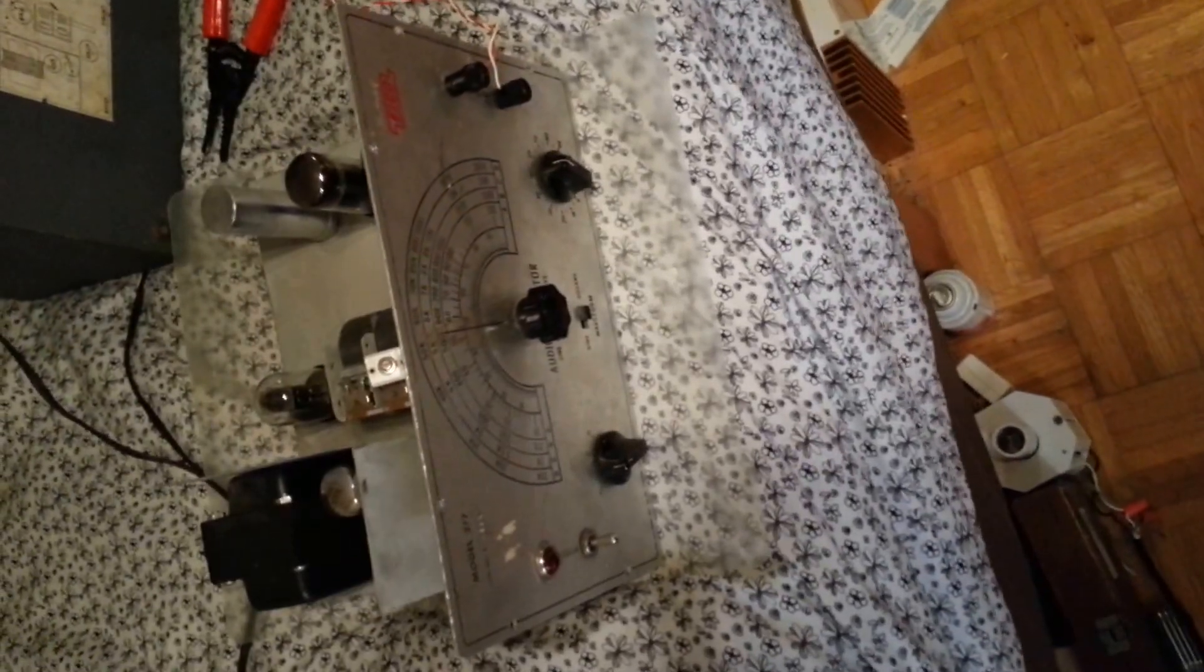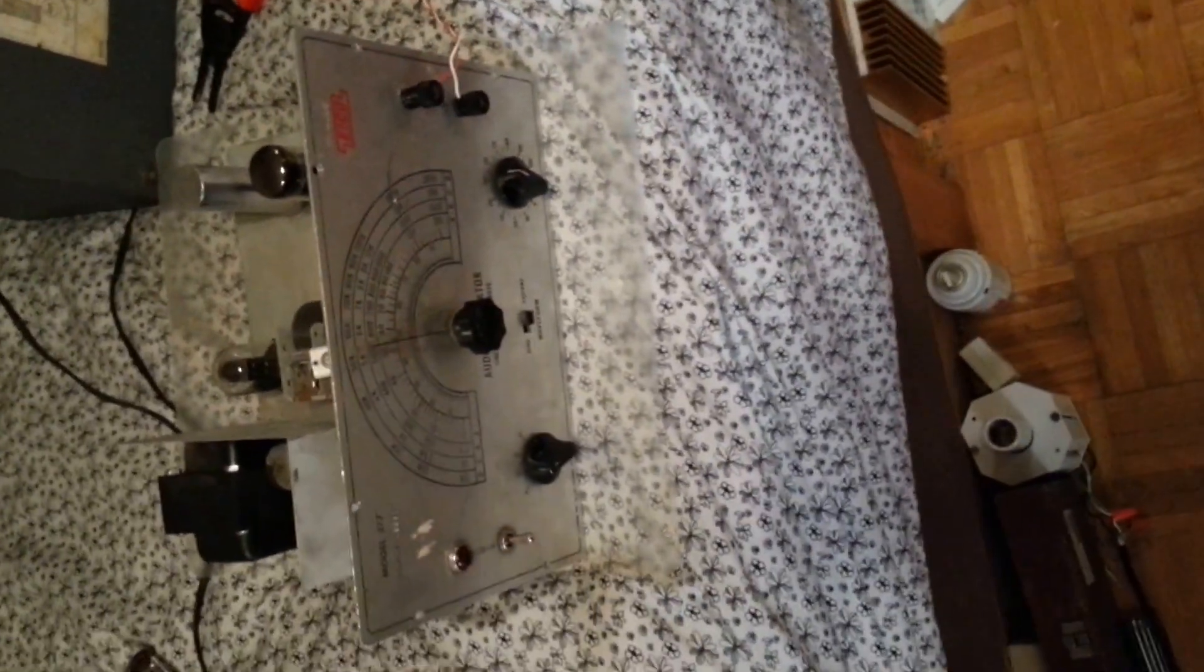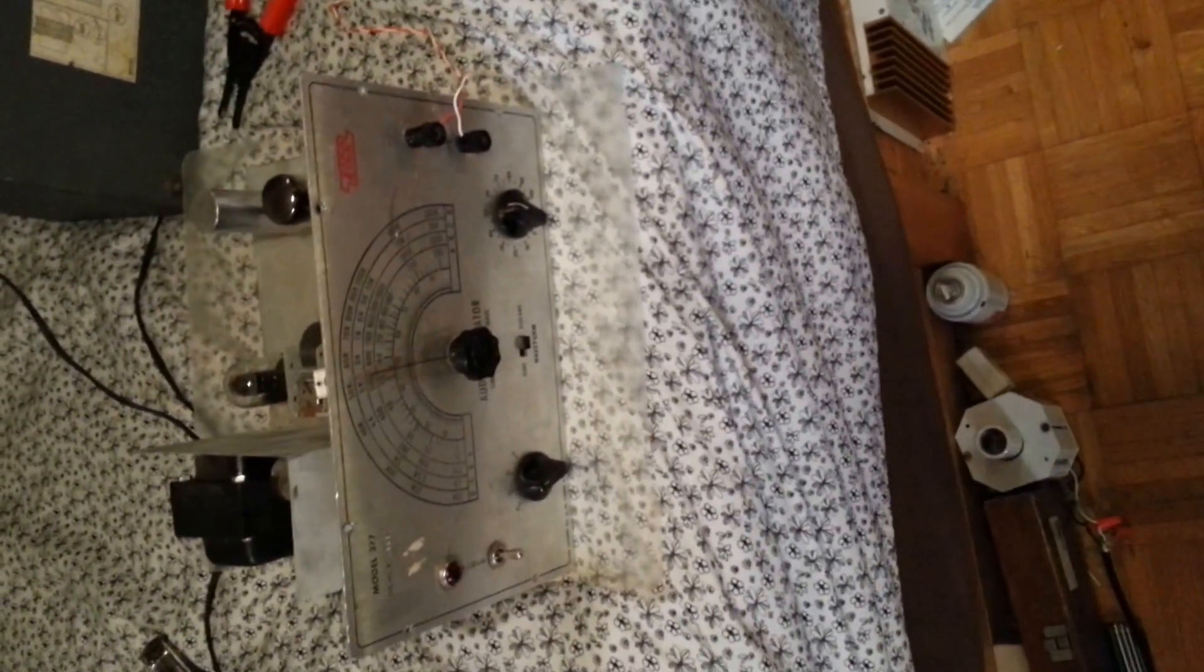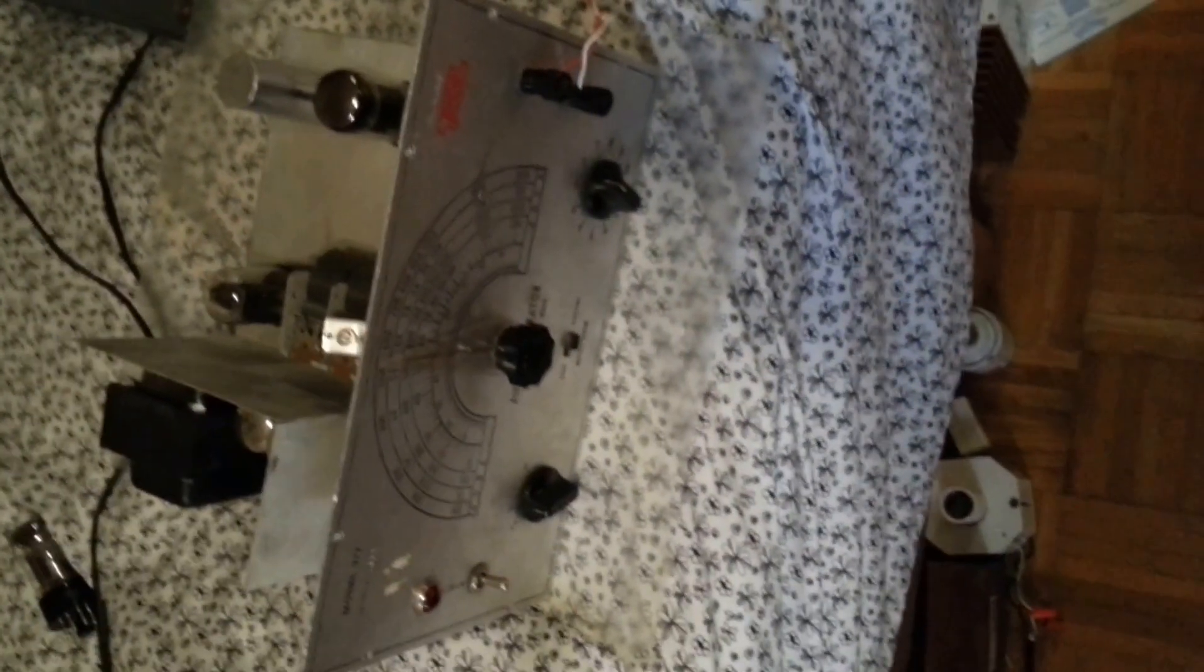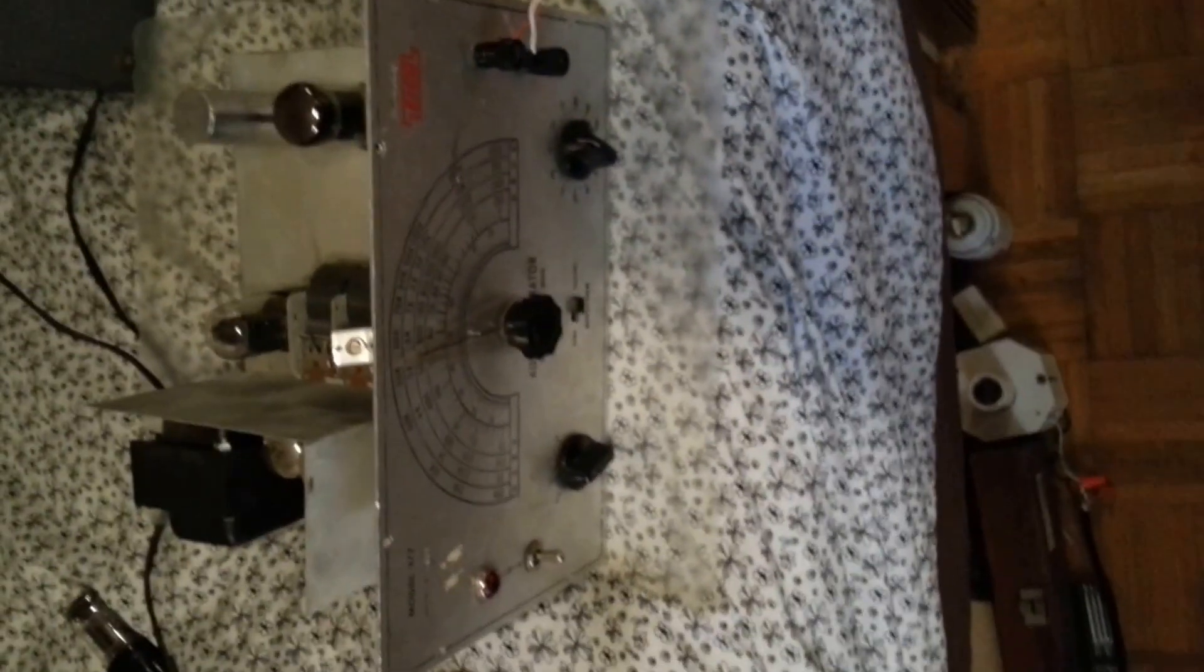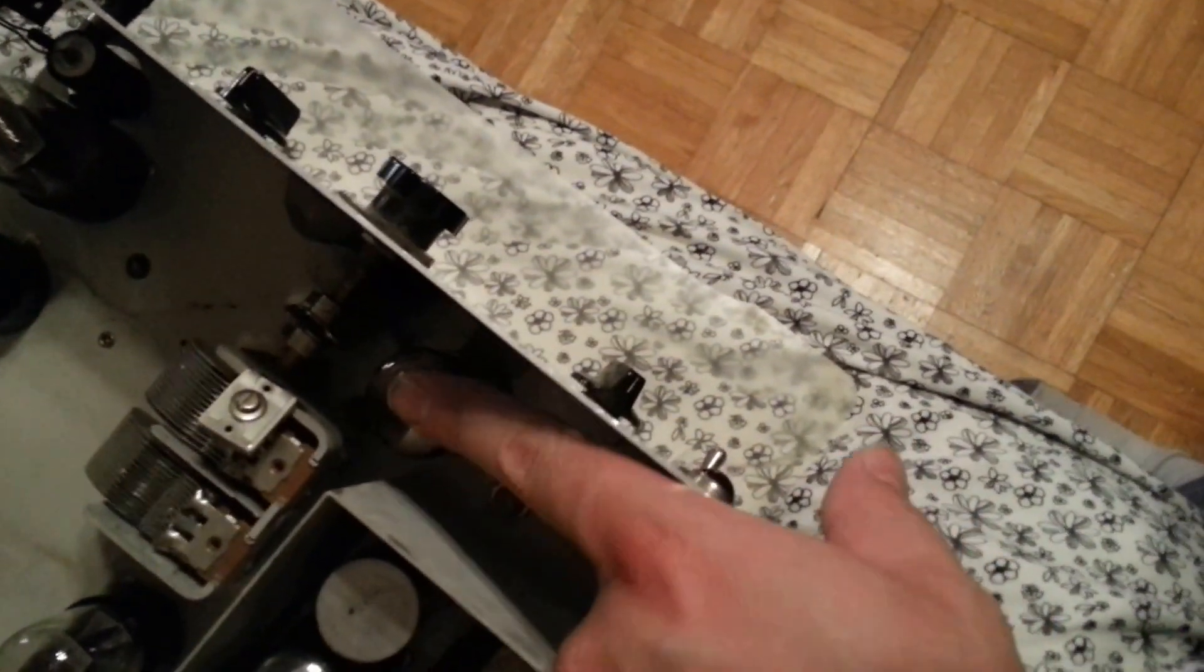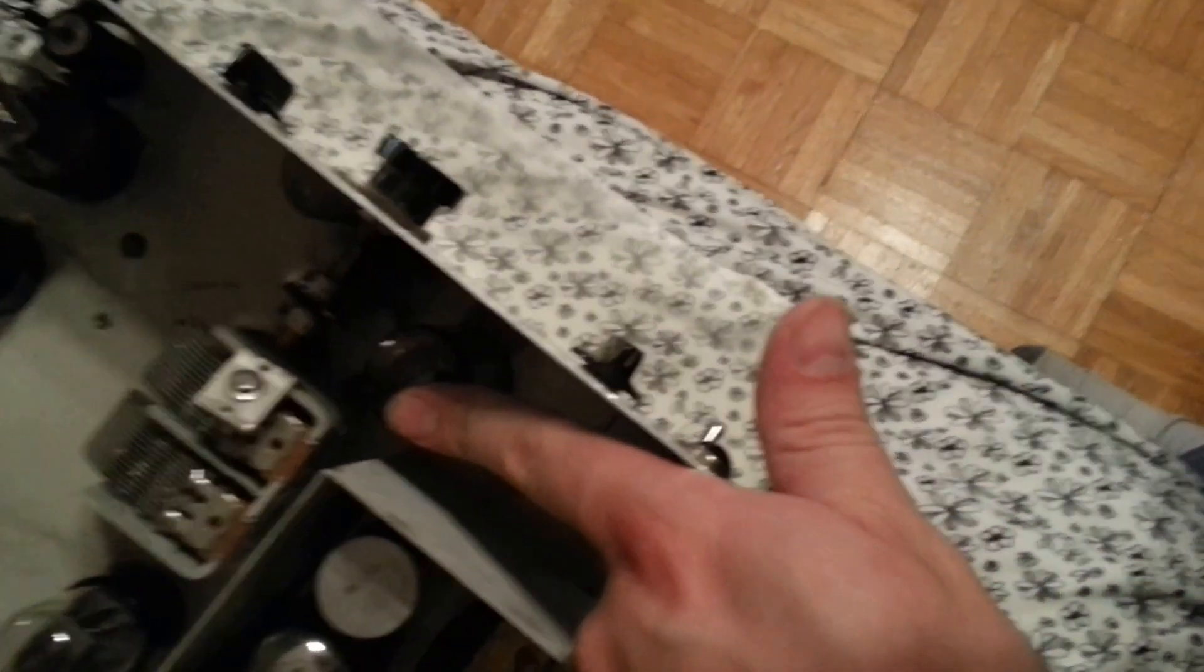Hello people, this is my new video on the EICO Model 377 signal generator which came from the Wichita Public Schools, USD 259. In my last video I was a bit incorrect about how this thing operates. This tube right here is the action, this tube which was originally a 6SJ7, I switched it out to a 6SK7.